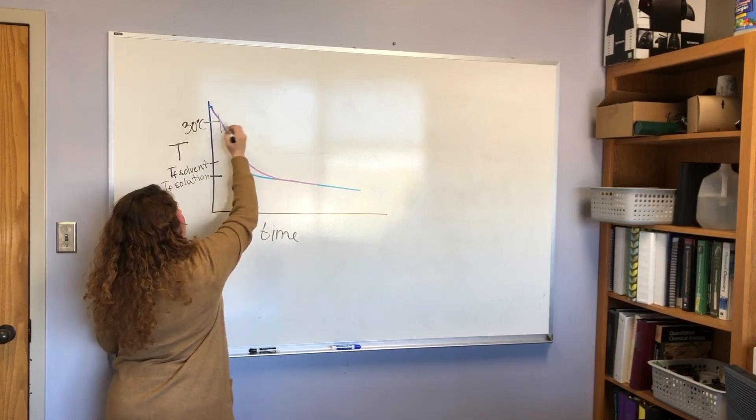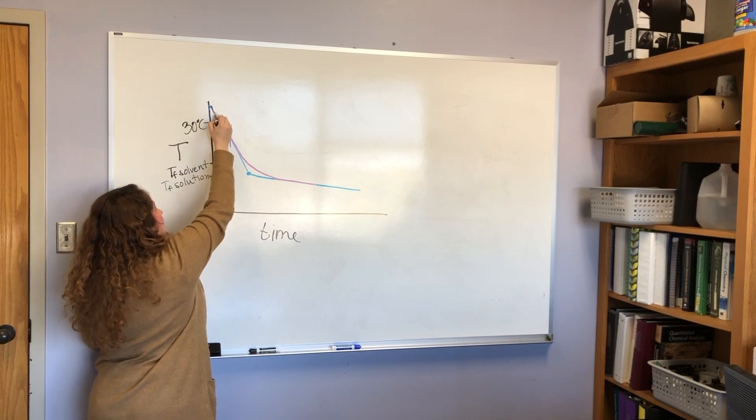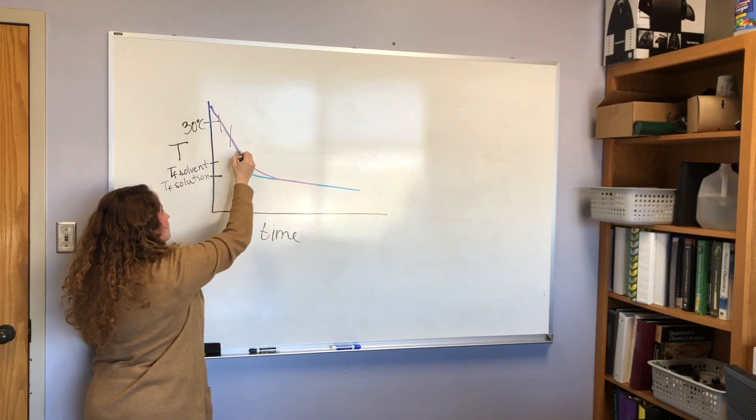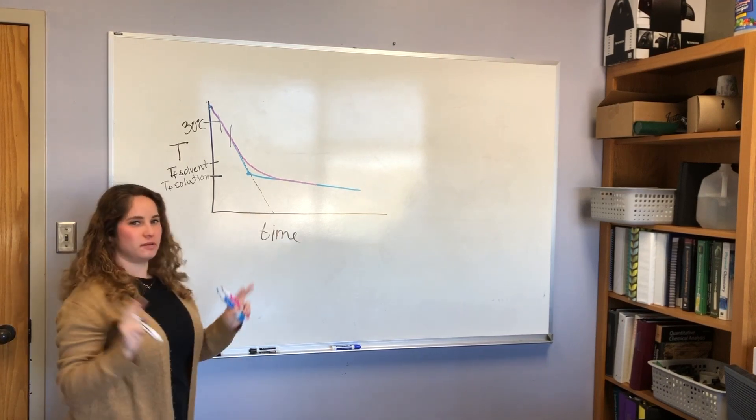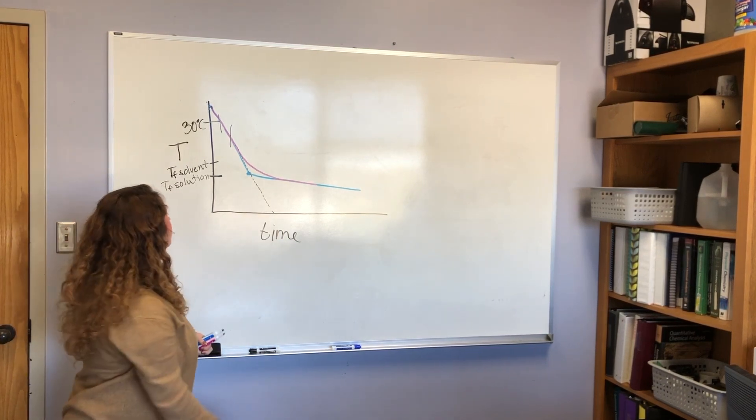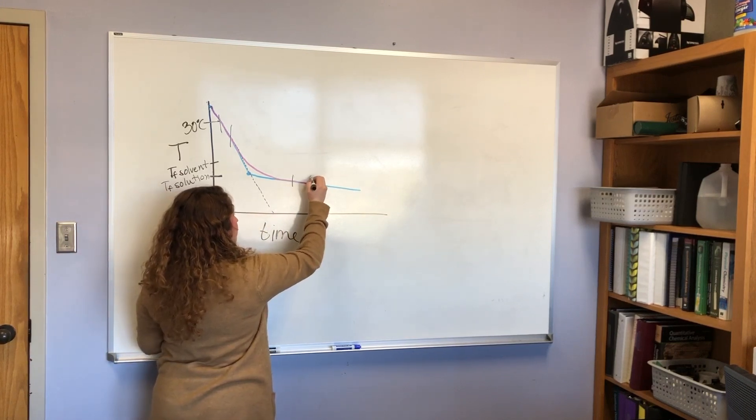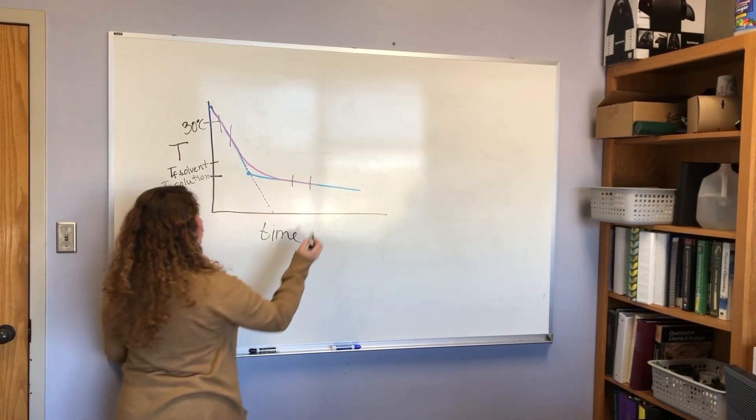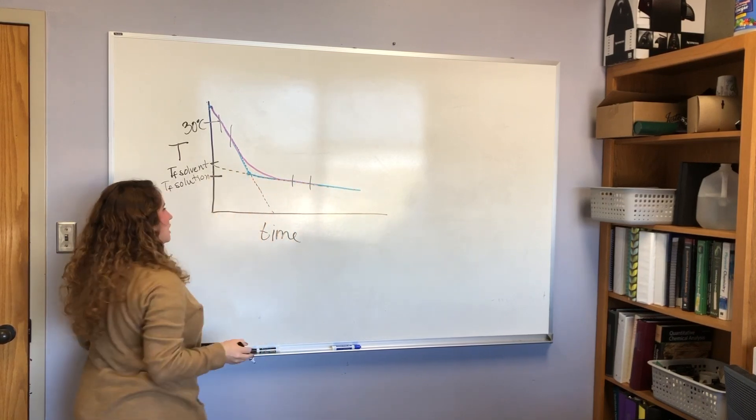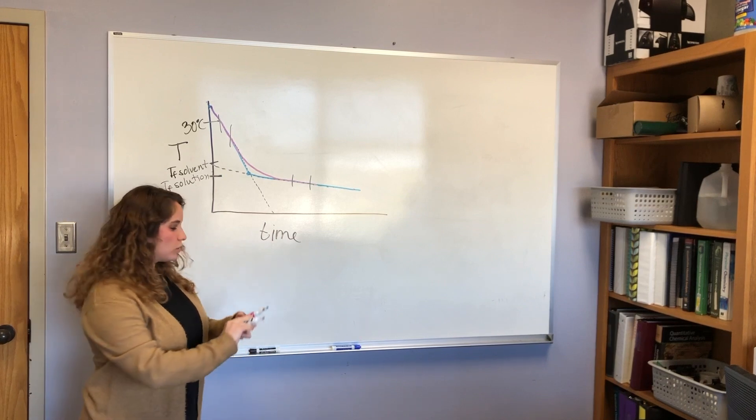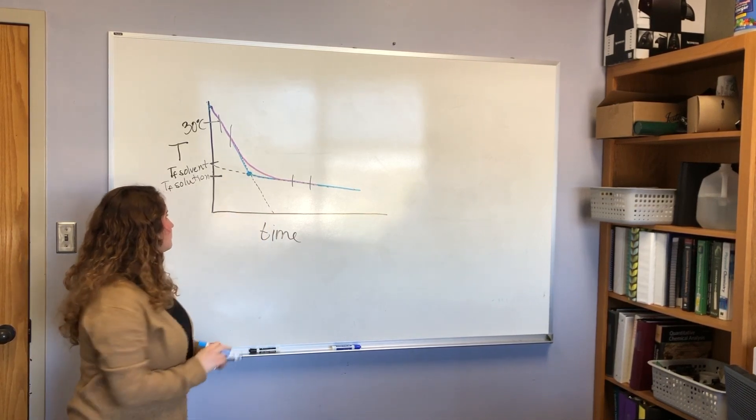So what you want is to recreate this perfect world scenario using lines of best fit. So you're going to select a linear portion of your data and get a line of best fit, which hopefully aligns with what the perfect world scenario would be. And then you're going to get a line of best fit for your freezing curve, which again should line up with the perfect world situation. Where they intersect is your freezing point.